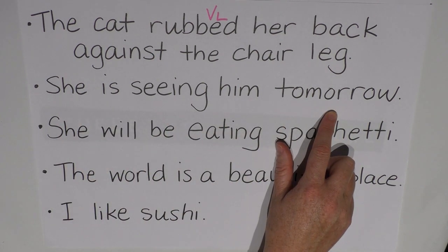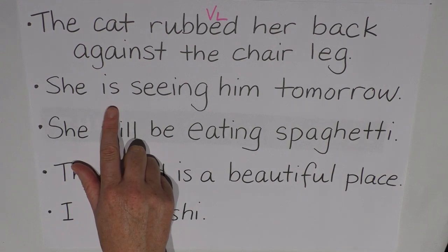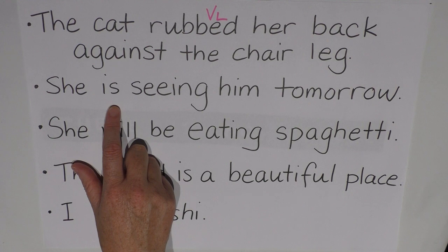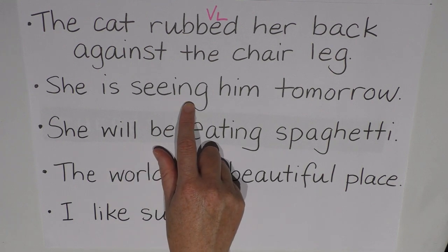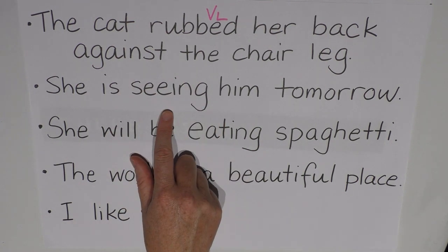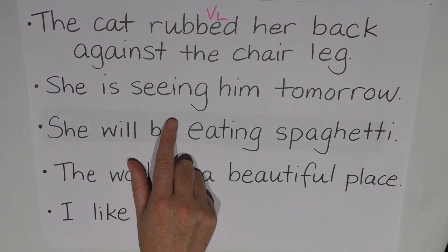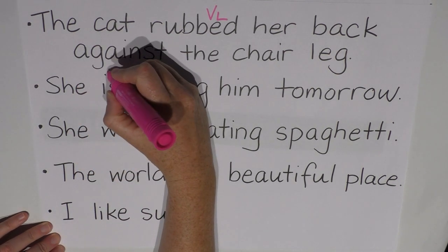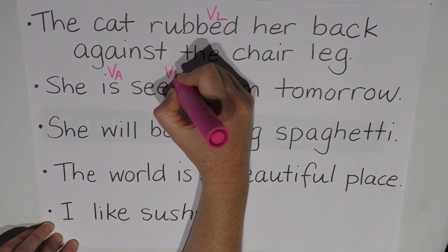Let's look at the next one: She is seeing him tomorrow. Now, 'is' is definitely a primary auxiliary verb, but I know it can also be a lexical verb. So I look on either side of it, and I can see there's another verb following 'is'. It's ending in -ing, and it's the verb 'to see' — something that she is doing. There can't be two lexical verbs, and there can't be an auxiliary verb without a lexical verb. So 'is' is our primary auxiliary verb, and 'seeing' is our lexical verb in this sentence.